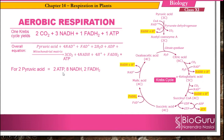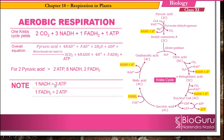For two pyruvic acid molecules, two ATPs, eight NADH, and two FADH2 are generated. This is because after the breakdown of glucose, two pyruvic acid molecules are generated. So whatever molecules are generated from one pyruvic acid, multiply by two: one ATP becomes two ATPs, four NADH becomes eight NADH, one FADH2 becomes two FADH2. Remember: one NADH equals three ATP, and one FADH2 equals two ATP. This will help you understand the next topic — the electron transport chain and oxidative phosphorylation.